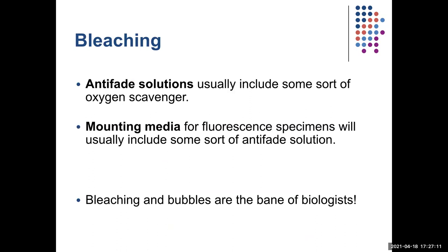This is why you have to do controls for everything and keep good notes — know what you're looking at and whether other people have looked at it before. To combat bleaching, we usually mount our specimen in some sort of anti-fade solution. Anti-fade solutions usually contain an oxygen scavenger — something that binds to oxygen radicals, which are the main controllable cause of bleaching (they're the same thing that causes rust). Then you try not to look at the specimen too much — expose it to as little light as necessary.